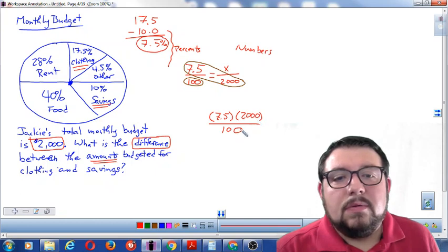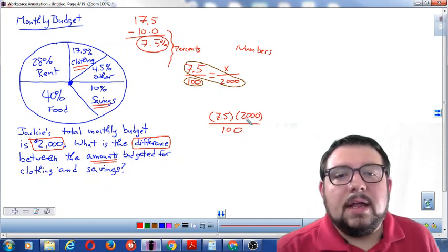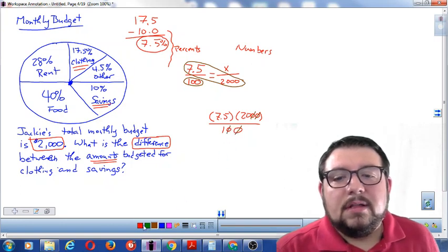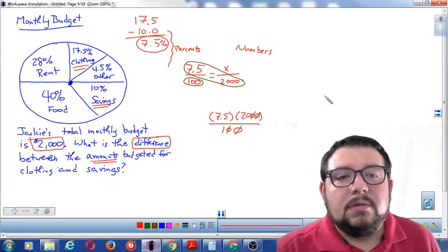When you have zeros on the top and the bottom and it's pure multiplication, you can cross off some zeros. So I'm going to cross off these zeros and these zeros. That way I don't have to divide by a hundred at the end. Now I'm going to do seven twenty times 7.5. So let's multiply these guys.